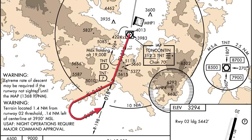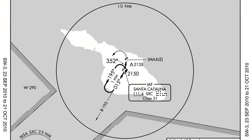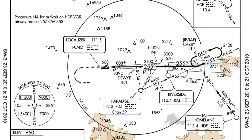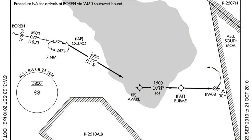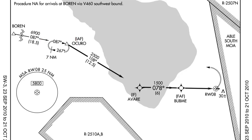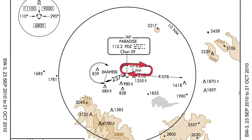The second way that procedure turns are noted on the approach plate is a little harder. A procedure turn must be done every time a little racetrack is noted over the IAF. For US approach plates, this racetrack is always noted as a full solid line. Don't confuse a solid line racetrack with a broken line racetrack — a broken line racetrack only denotes a holding point, a missed approach holding point. So the broken line racetrack does not denote a procedure turn; only a solid line racetrack does.